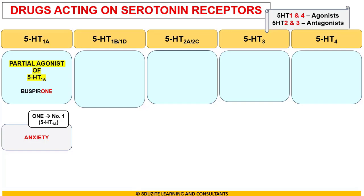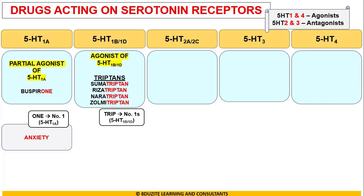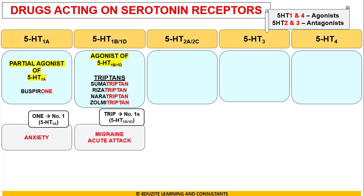Coming to 5-HT1B/1D, we have agonists of these receptors — all triptans: Sumatriptan, Rizatriptan, Naratriptan, and Zolmitriptan. If you look at the red letters, there is TRIP — triptans are always number 1. These drugs are 5-HT1B/1D agonists and are used in acute attacks of migraine.